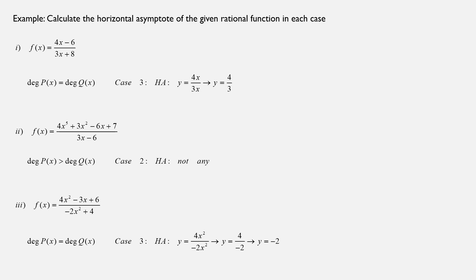Second example: f(x) equals (4x⁵ plus 3x² minus 6x plus 7) over (3x minus 6). The degree of the numerator is 5 while the degree of the denominator is 1. Since the numerator's degree is bigger, there is no horizontal asymptote.